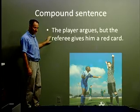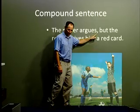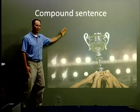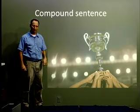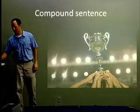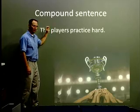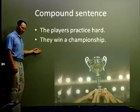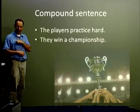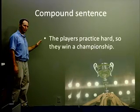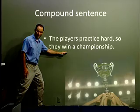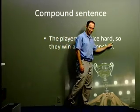'The player argues, but the referee gives him a red card.' You can see one independent clause, comma, coordinating conjunction, and then the second independent clause. The one thing to remember: when I have this second independent clause, I need a comma before the coordinating conjunction. Here, we see they're holding the trophy — they win the championship, but how do you win the championship? You practice hard. So we have the idea of practice hard and win a championship. The players practice hard; they win a championship — two independent clauses. Joined together: 'The players practice hard, so they win a championship.' One independent clause — the players practice hard — another independent clause — they win a championship — joined with a comma and 'so.'